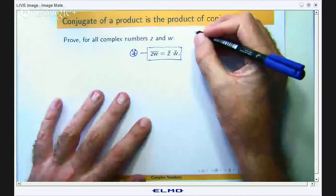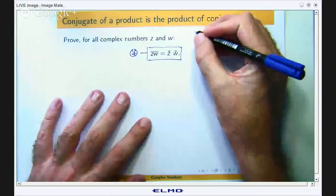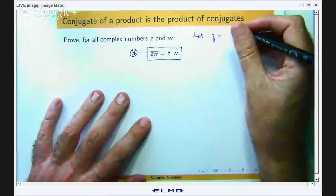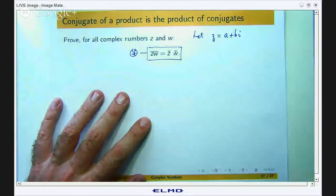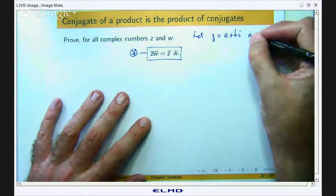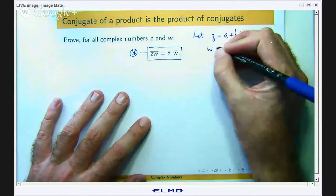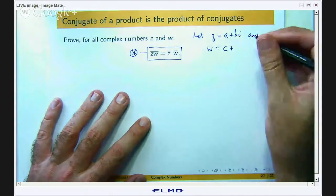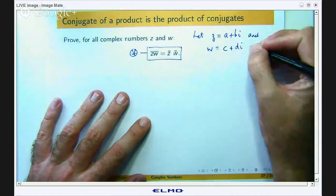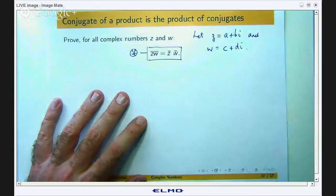So I am going to let z be a plus bi where a and b are real numbers and I am going to let w be c plus di again where c and d are real numbers.